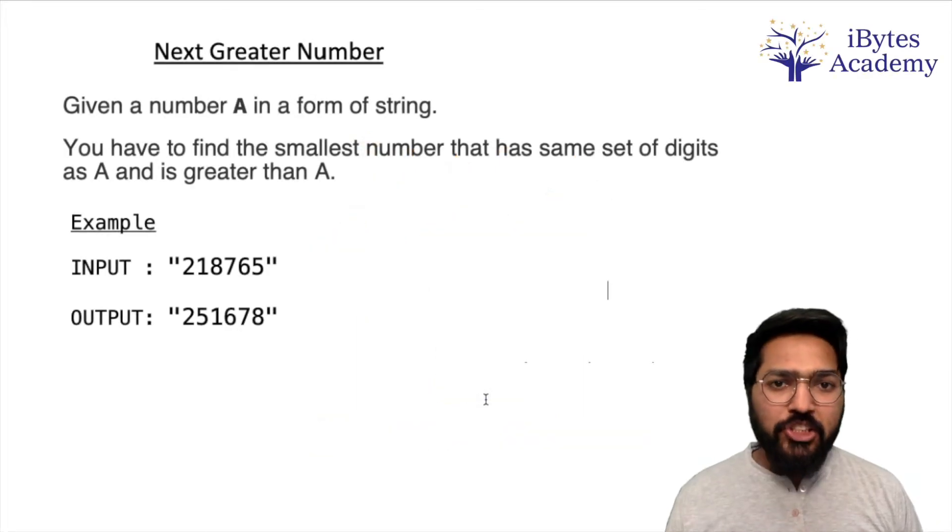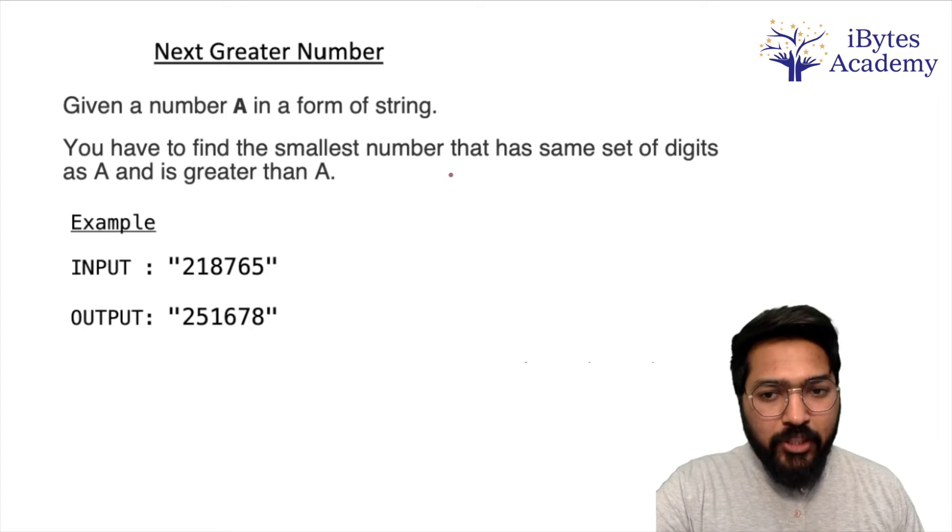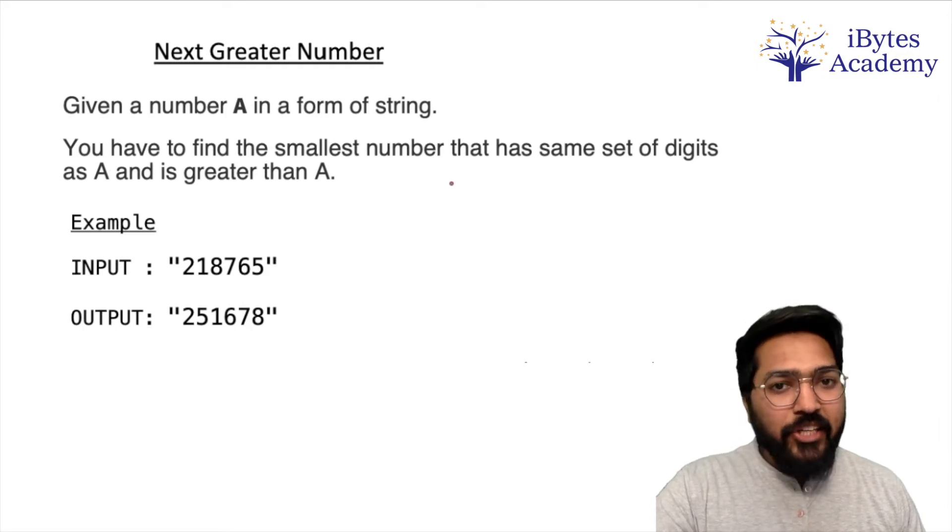Hello everyone, so in today's coding session we will solve a problem that has been asked in an Amazon interview. The problem is easy, let's straightway dive into it. Given a number A in form of a string, you have to find the smallest number that has same set of digits as A and is greater than A.